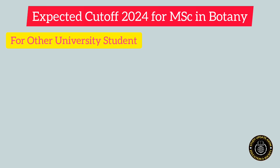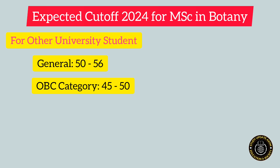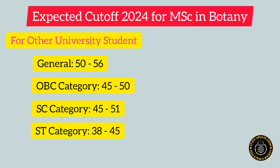Now let's see what the expected cutoff may be for MSc in Botany for other university students. For General category, the cutoff may lie between 50 to 56. For OBC category, the cutoff may be in the range of 45 to 50. For SC category, it may lie between 45 to 51. For ST category, including ST Hills and Plains, the cutoff may lie between 38 to 45. For students who belong to EWS category, the cutoff may lie between 48 to 55.